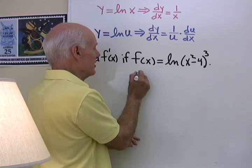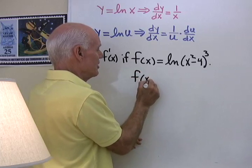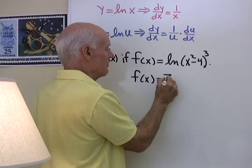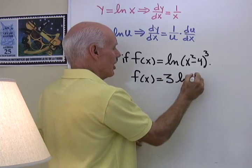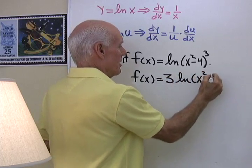So I'm going to do that. It generally turns out to be easier if you simplify the expression first, so 3 natural log of x squared minus 4.